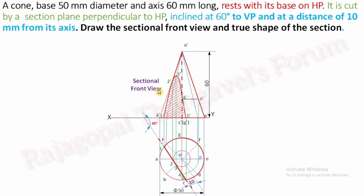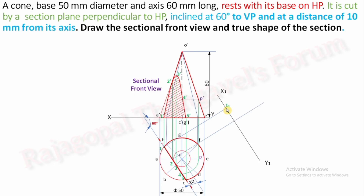Now proceed to the true shape of the section. Draw a parallel plane of projection X1Y1, which is parallel to the 60-degree section plane line. Ensure X1Y1 does not overlap the simple position or the sectional front view — take it away from the drawing. Extend perpendicular projectors from all section plane cutting points to X1Y1. Point 1 dash is exactly on XY, so extend until it touches X1Y1 and mark it 1,1. All projectors must make a 90-degree angle with X1Y1.